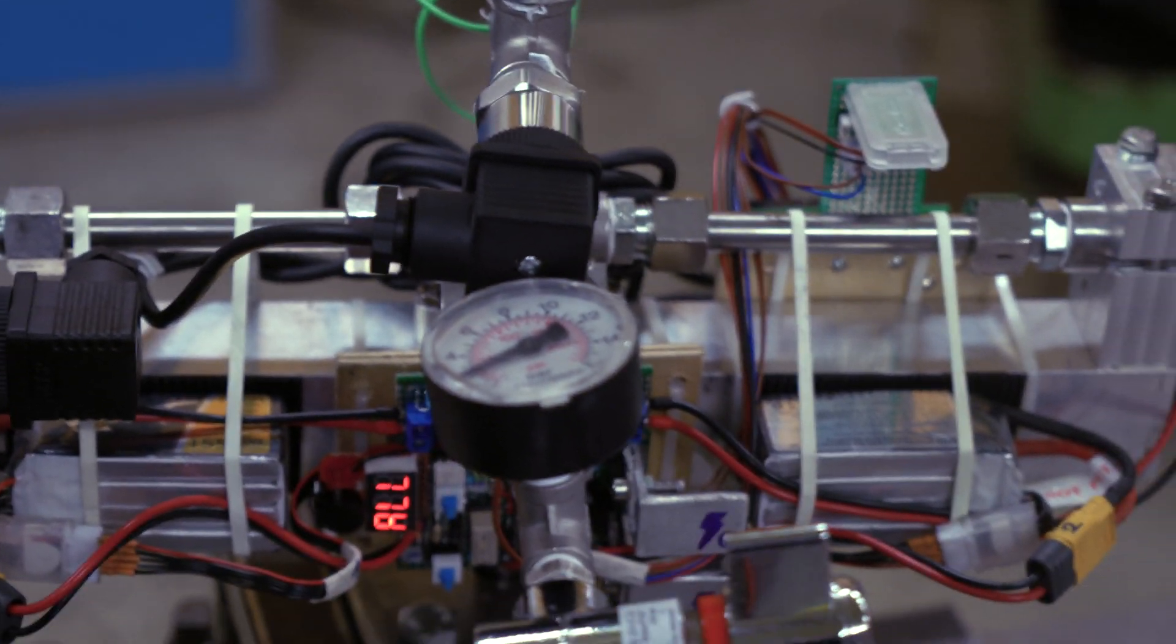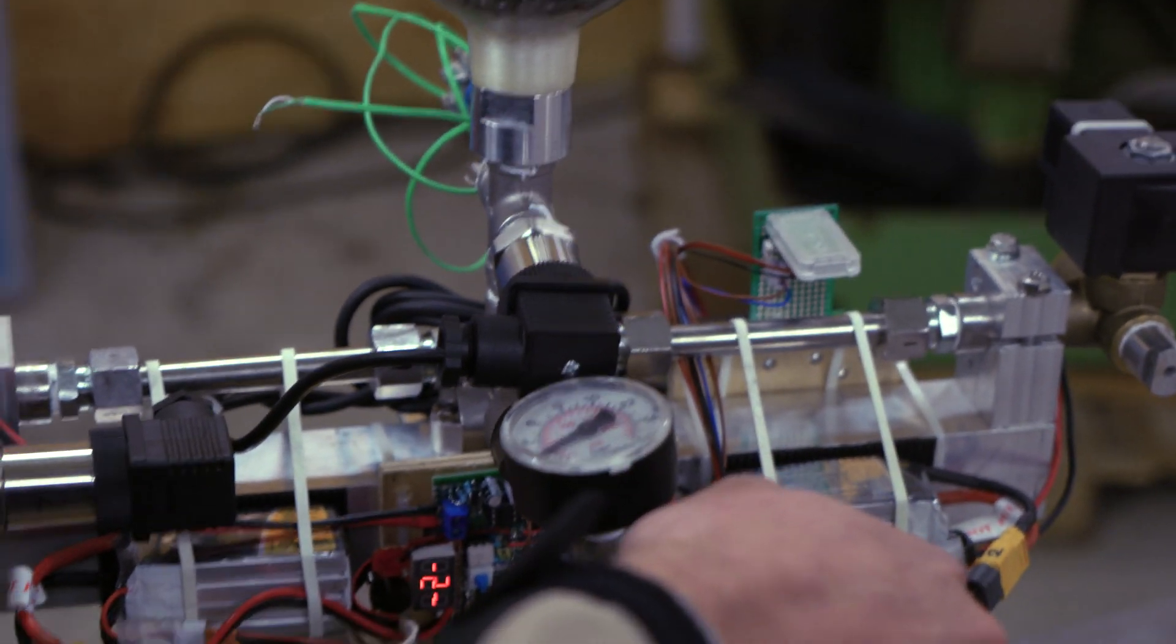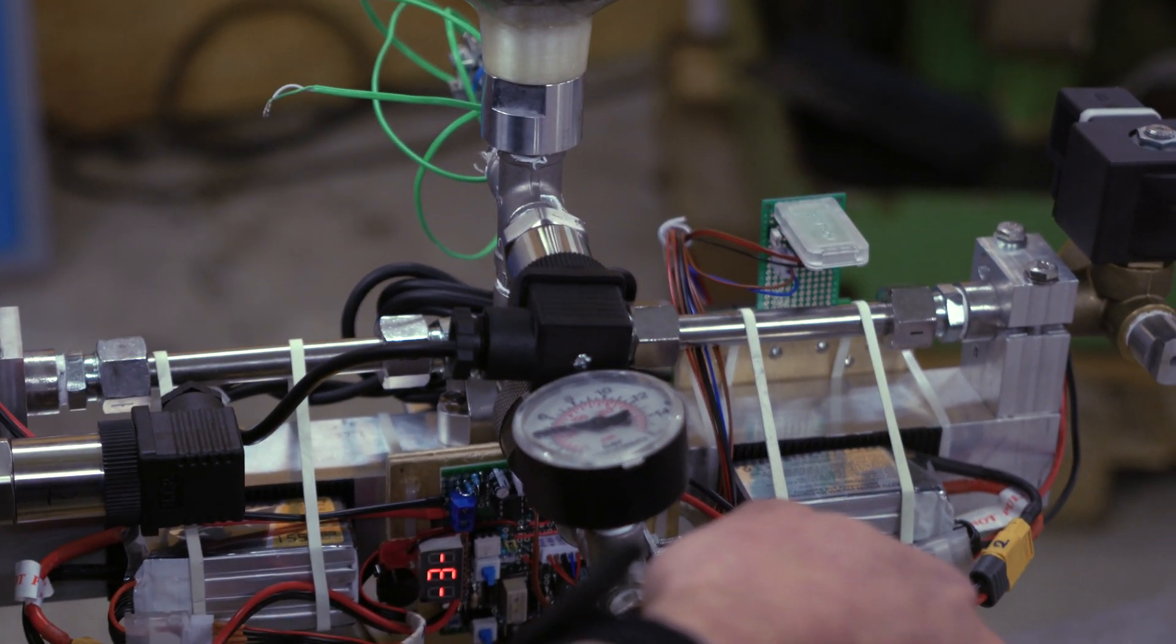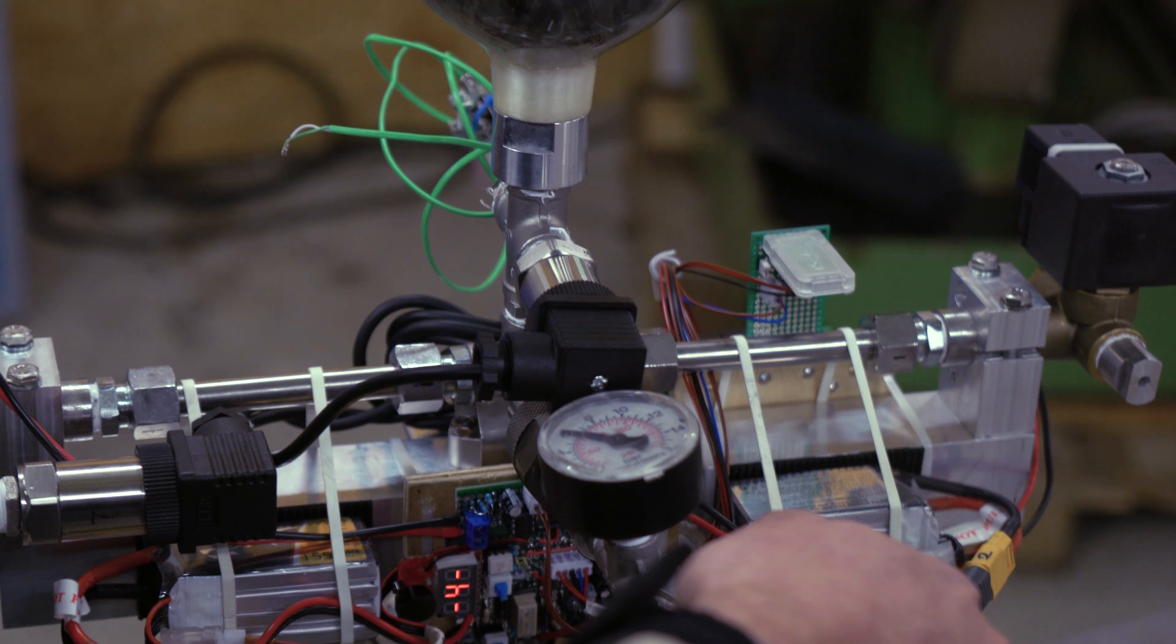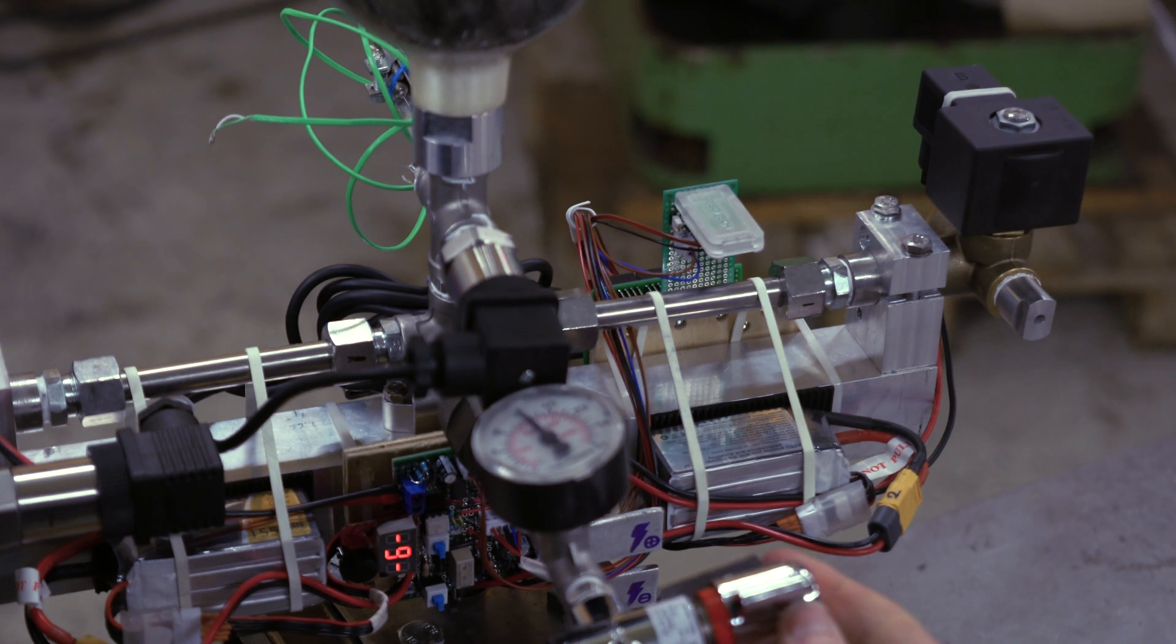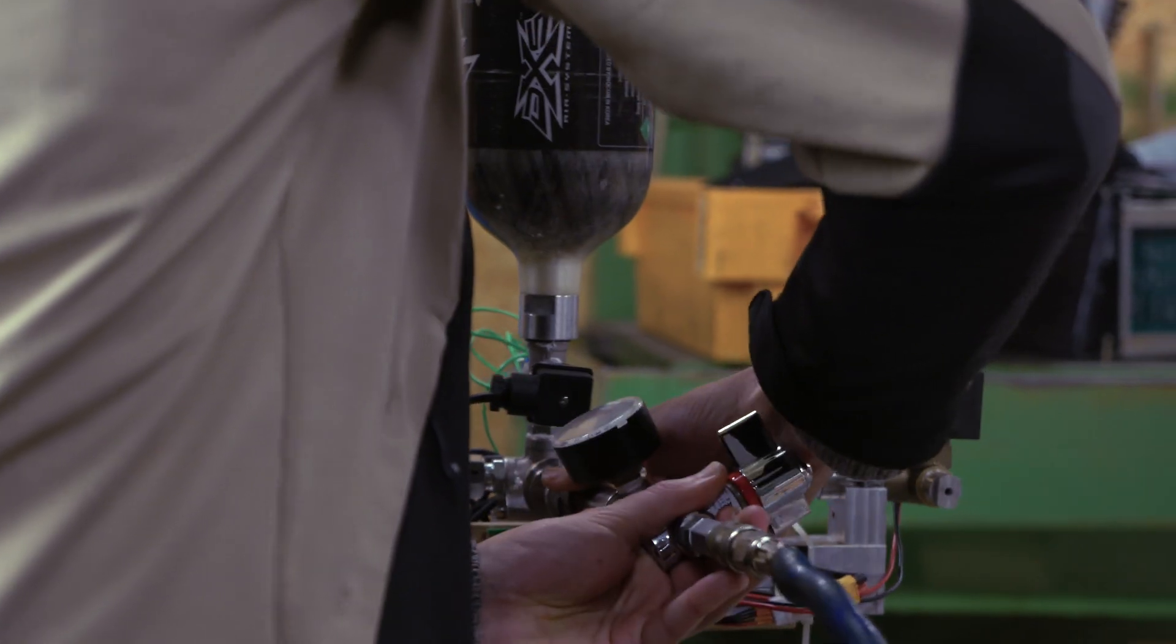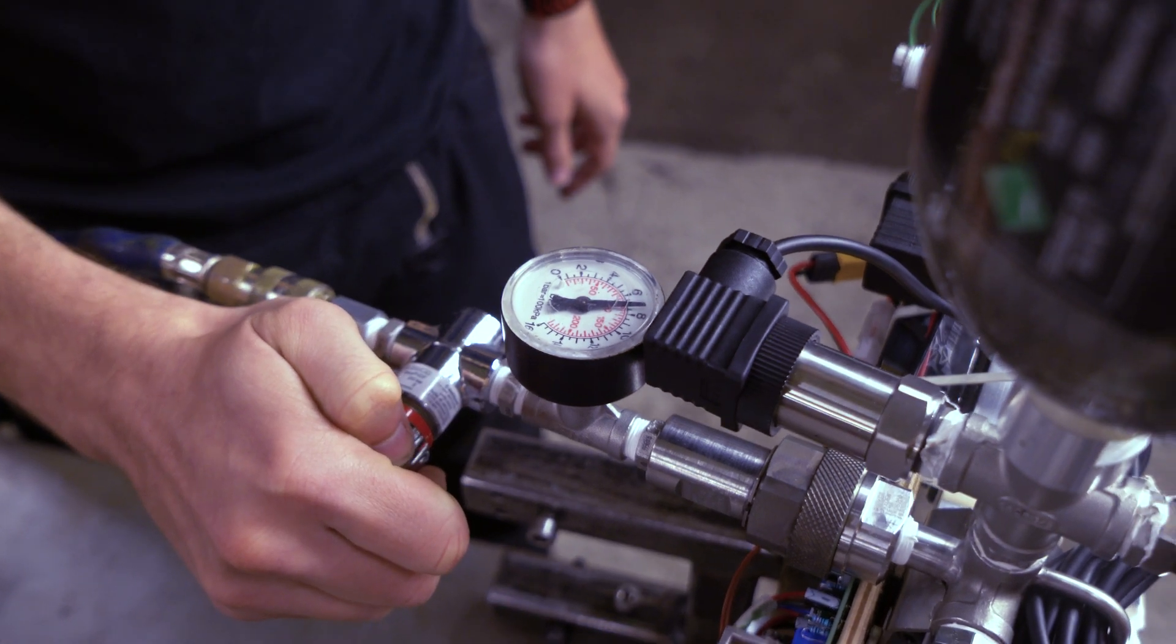And today we'll go with the smaller compressor to around 8 bars. So now the compressor is connected. And we can start pressurizing by opening the valve. And now we can disconnect it again. Good, now it's full of pressure.